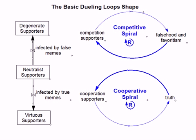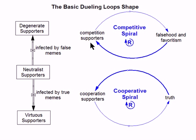We've introduced the powerful concept of memes. A meme is a mental belief you learned from others. Memes follow the same three steps of evolution that genes do: replication, mutation, and survival of the fittest. The only difference is memes live in minds instead of cells. When a neutralist supporter becomes swayed enough by the mantra of falsehood and favoritism to become a degenerate supporter, we say he has been infected by false memes — just like being infected by a virus. Memes allow us to more easily and accurately model social systems. Now that we have the degenerate supporter stock, we no longer need the competition supporters node — it's been replaced by a higher level of abstraction, so let's go ahead and delete it.